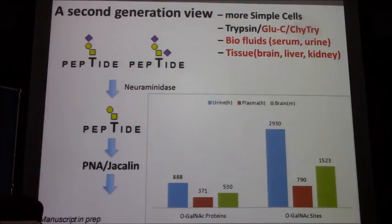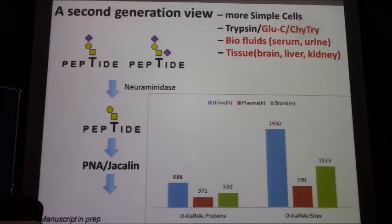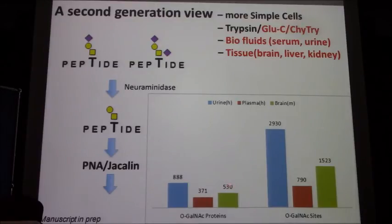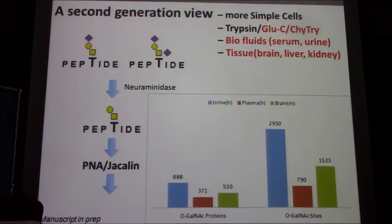Here is a snapshot of three real samples. From one single experiment we identified roughly 800 glycoproteins in urine, 370 glycoproteins in plasma, and 530 glycoproteins in mouse brain. These are the site numbers: 3,000 O-glycosites uniquely and unambiguously assigned in urine, 790 for plasma, and 1,500 for mouse brain — from ETD only. We are still working on this data and on the manuscript.